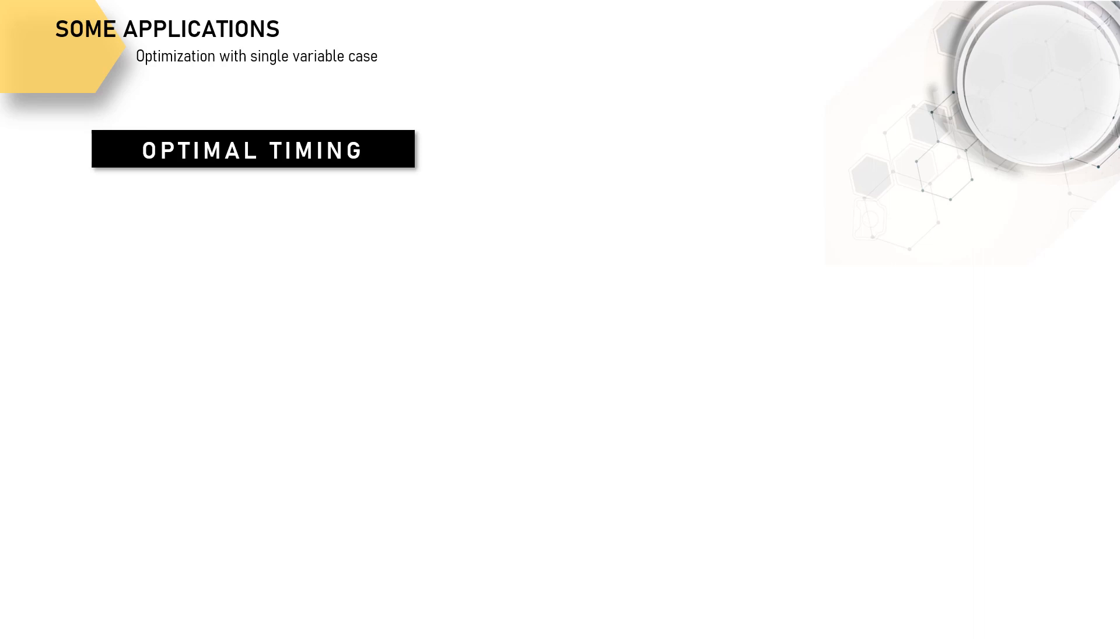So optimal timing is about finding the best time. What for? To achieve or to get certain benefit. Therefore, time here is the choice variable whereas the objective is to maximize the benefit. Then again, we have the optimization step and information as follows.